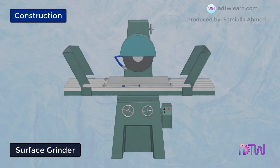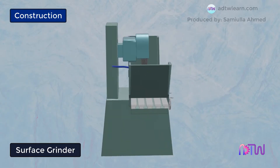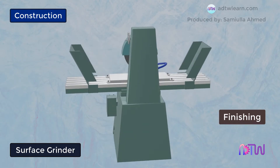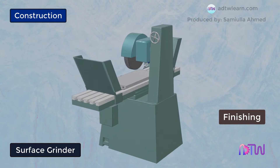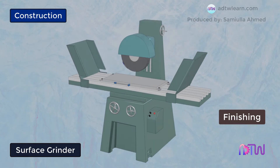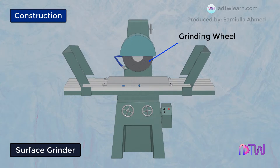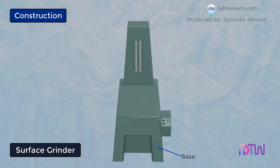The surface grinding machine is used for finishing — to provide a good surface finish for the workpiece. This machine uses a grinding wheel to remove material from the surface of the workpiece. The machine has a base over which the entire assembly is placed, which also absorbs the vibrations generated during the operation.